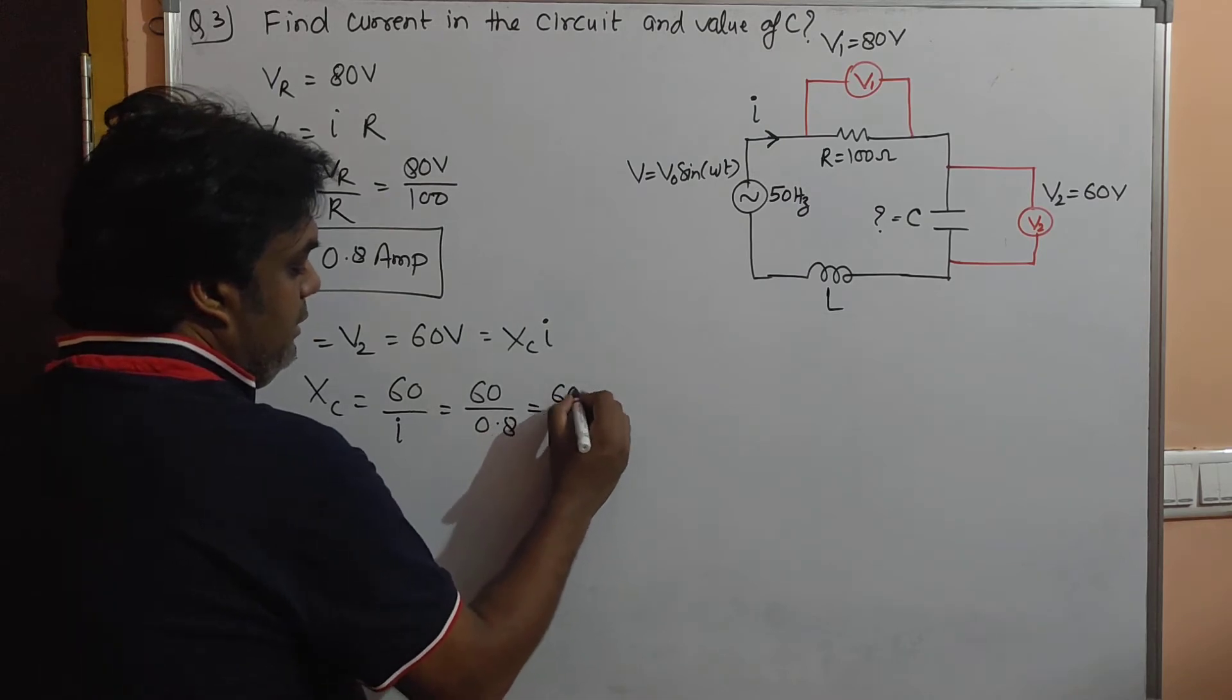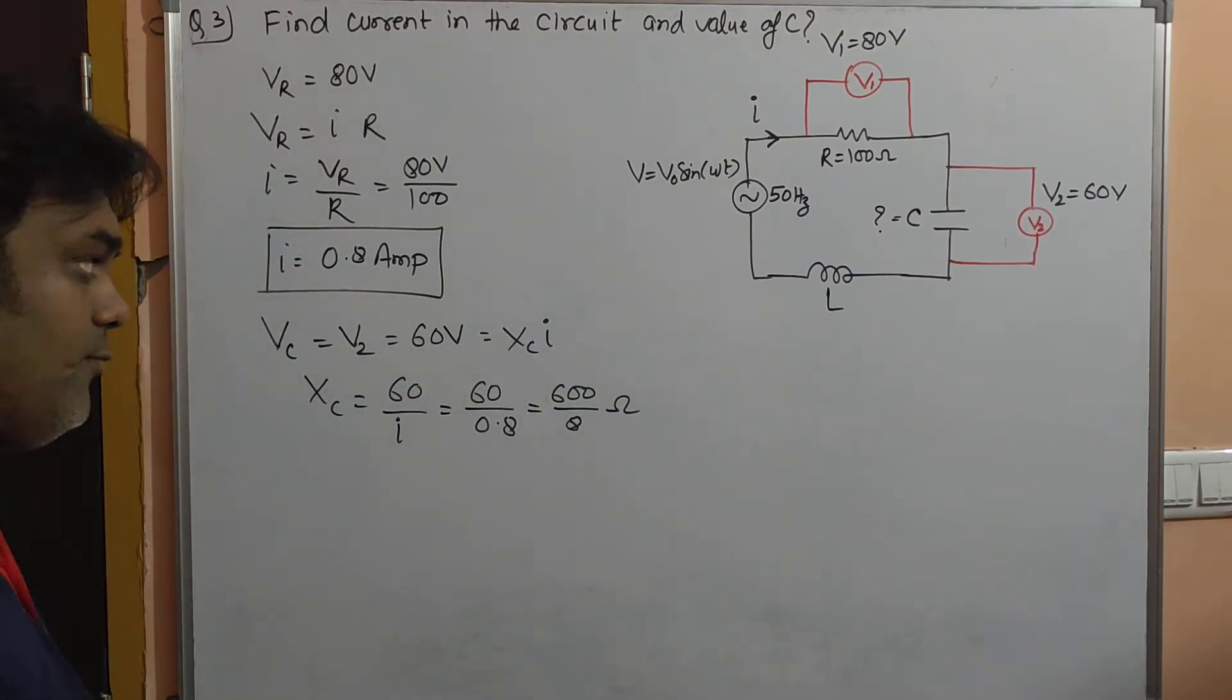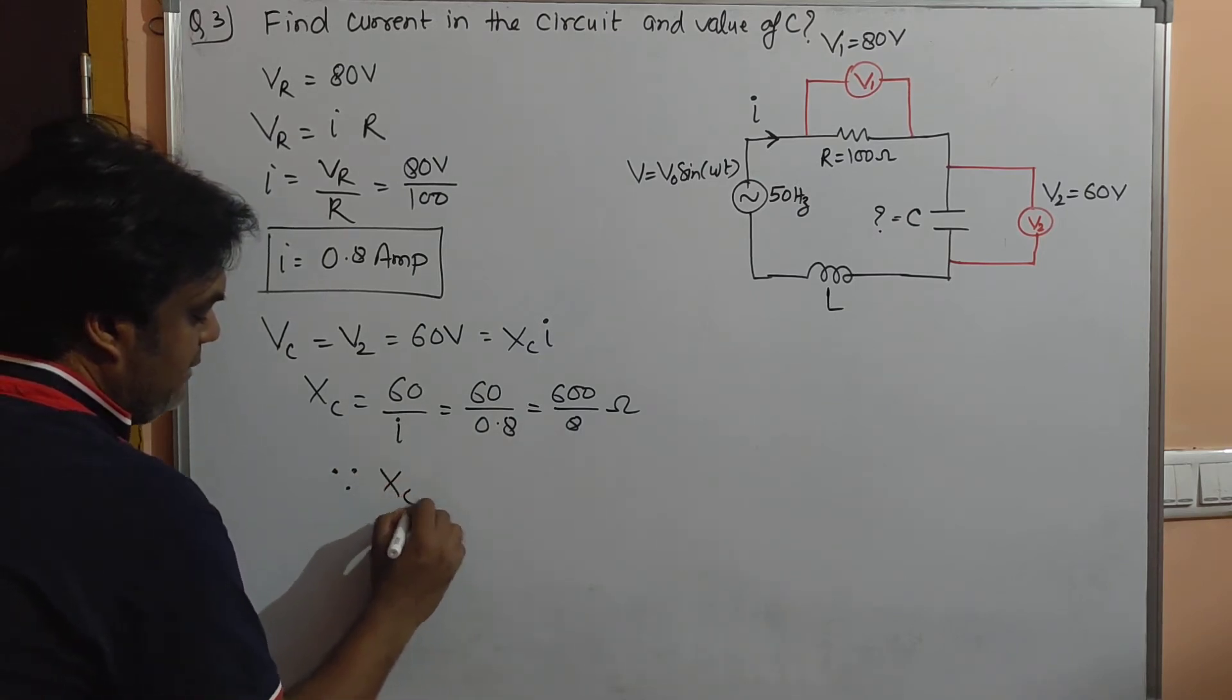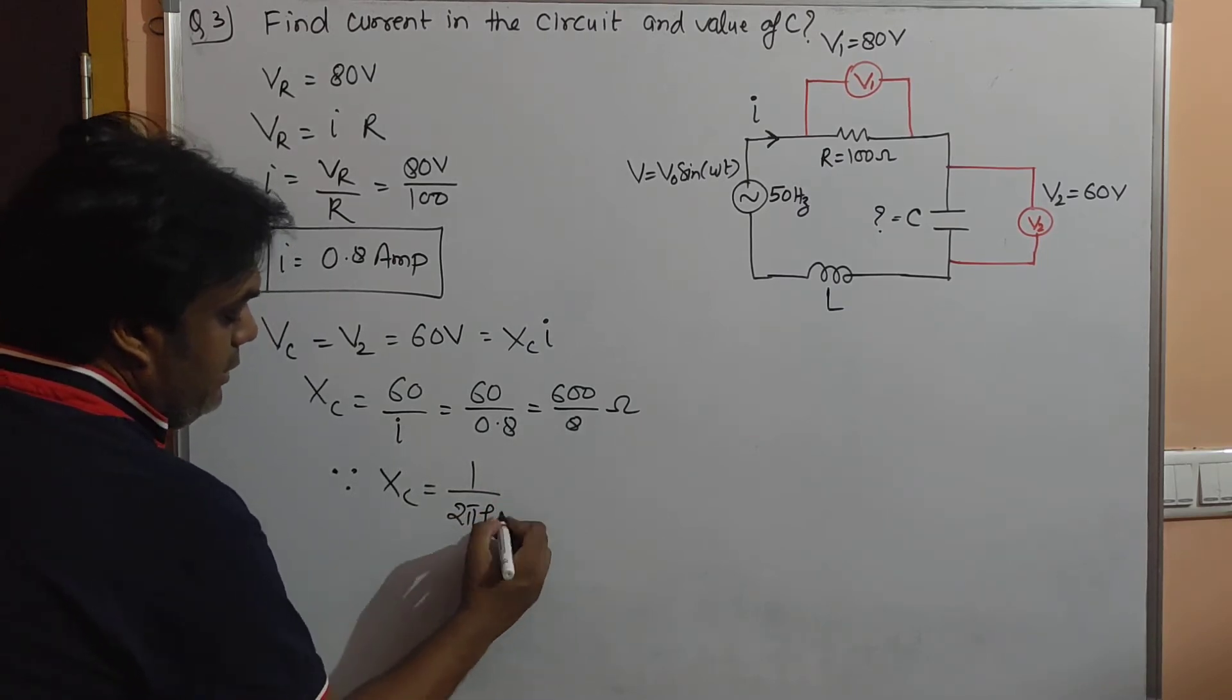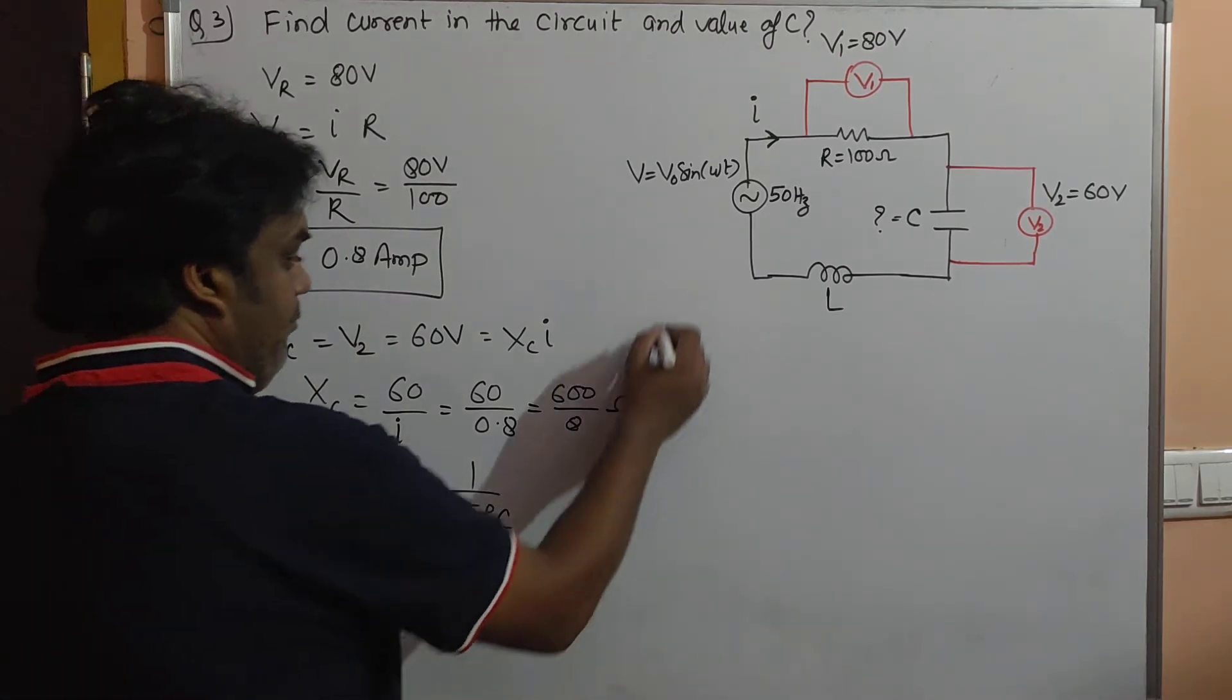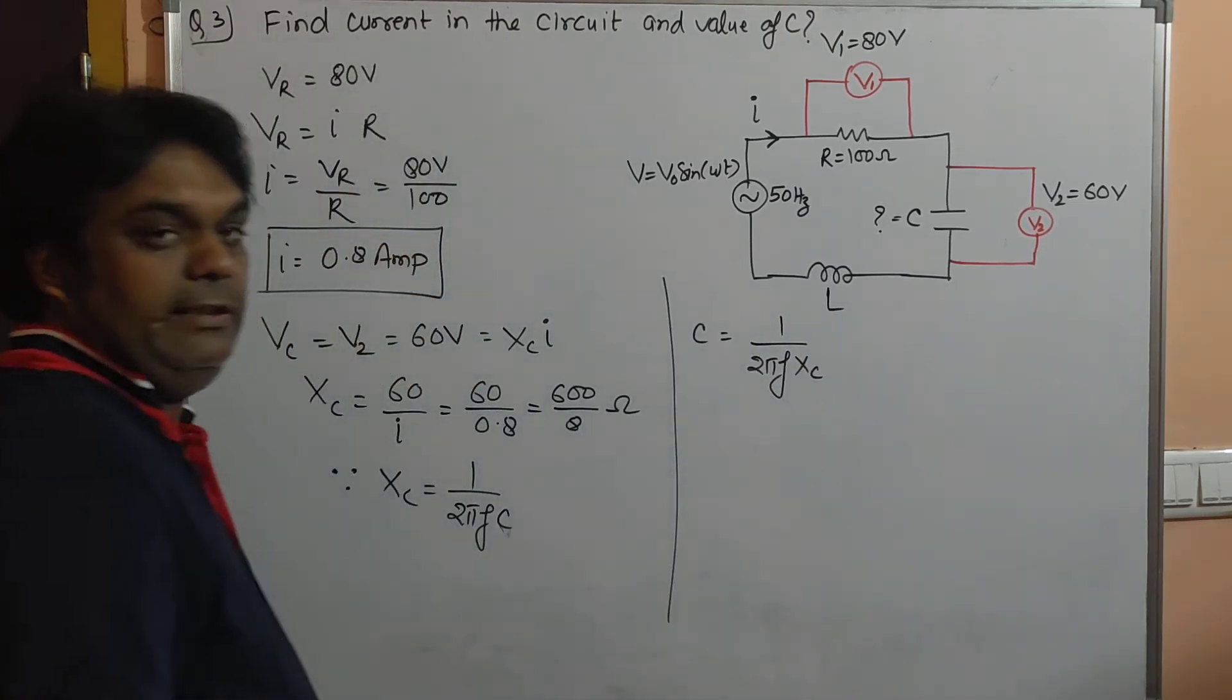Now for finding out capacitor, since we know Xc equals 1 upon 2πfC, let's substitute the value of Xc. From here, C equals 1 upon 2πf into Xc.